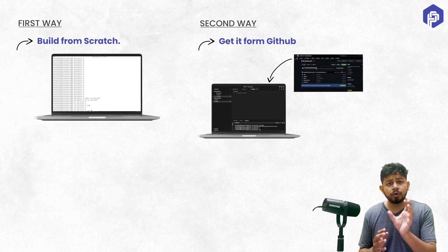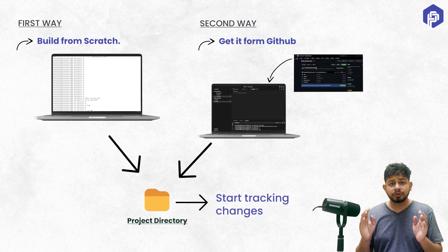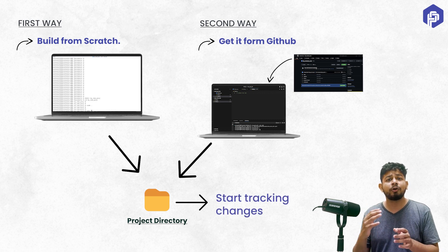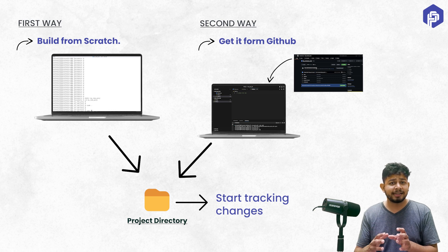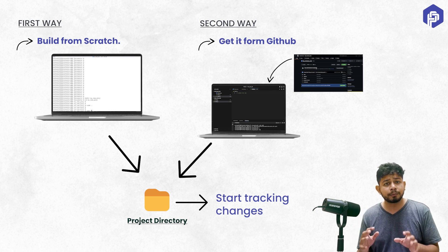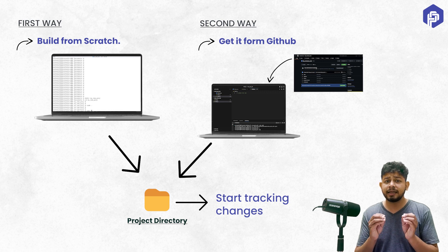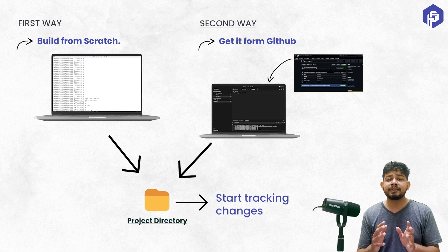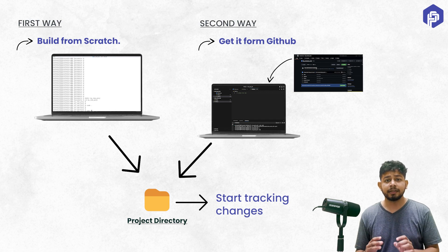In both these ways, I need to tell the project directory that I want to start tracking the changes — I want to listen to the changes in all the files and folders inside it. This process is known as initializing Git in the working directory or project directory. Let's see how to do this in both cases.